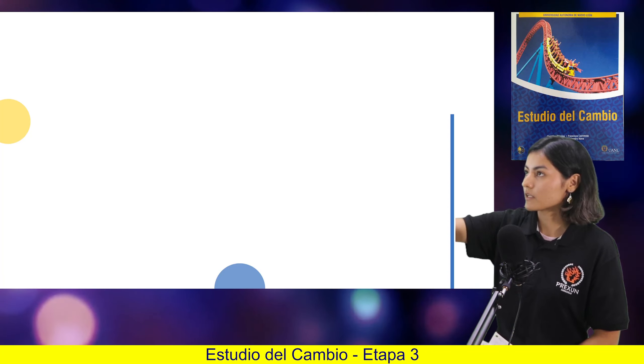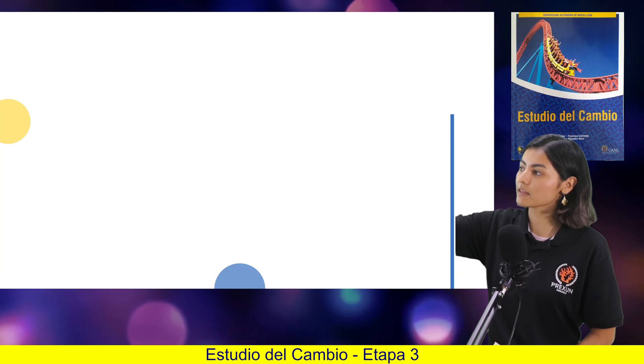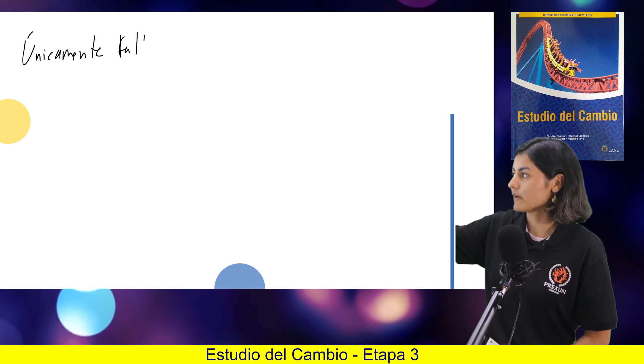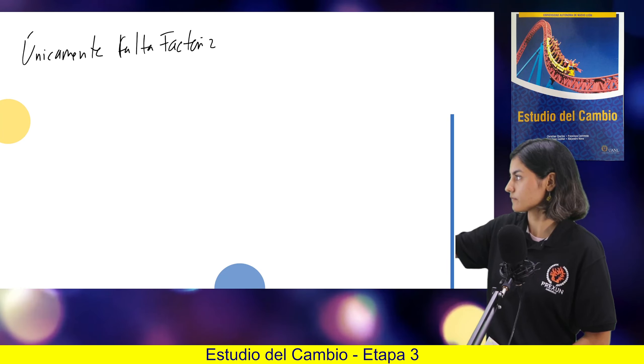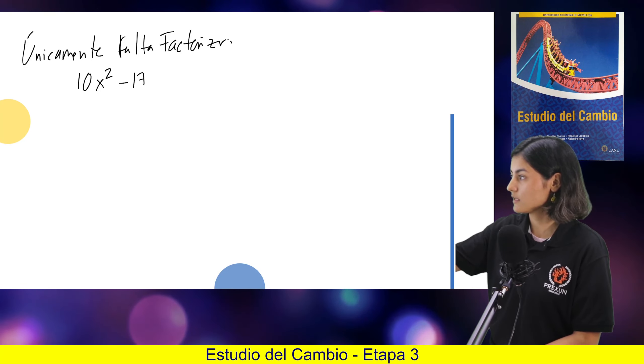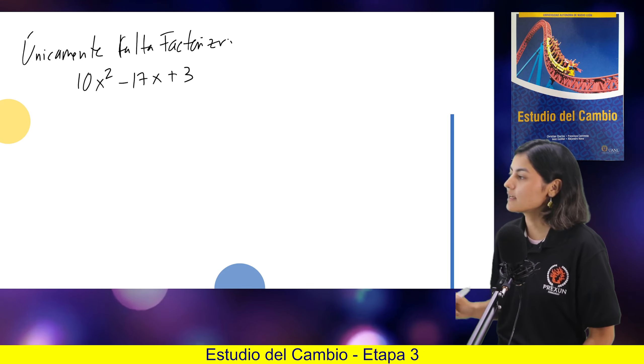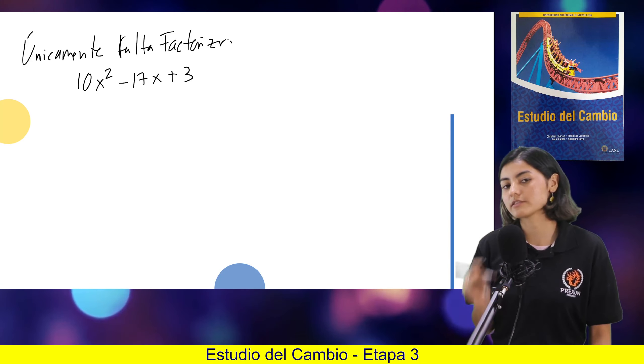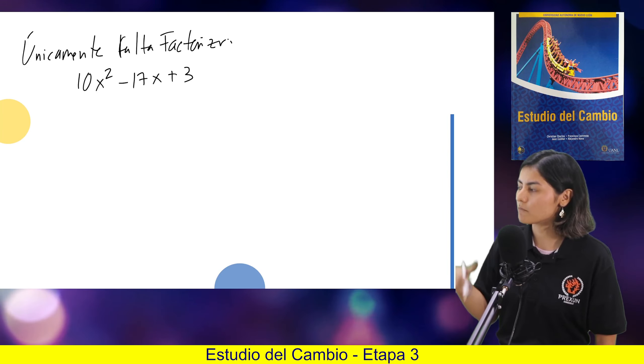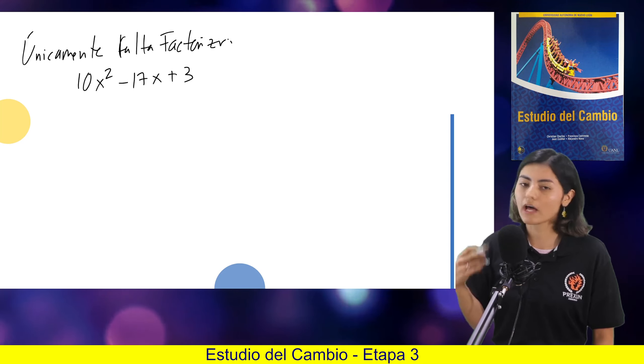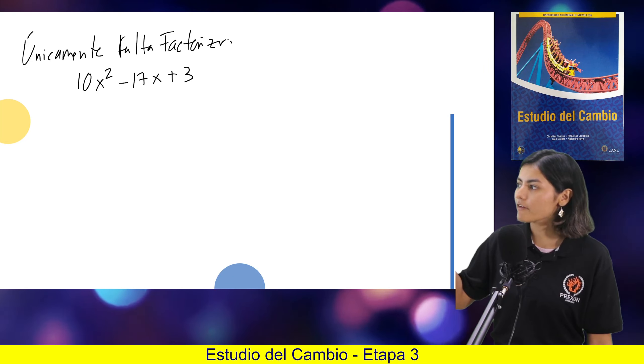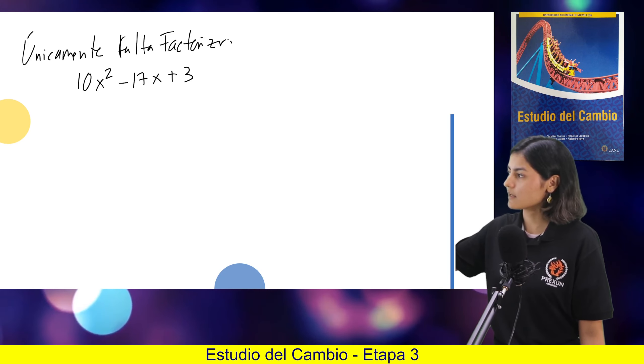Entonces, vamos a abrir aquí otra hojita. Únicamente me falta factorizar ese cociente. Falta factorizar 10x cuadrada menos 17x más 3. Y ya sé que aquí también se puede usar división sintética. No crean, en las cuadráticas también se puede utilizar división sintética. Me quedo con el 10, con el menos 17, con el 3. Y busco algo que se llama posibles raíces racionales.